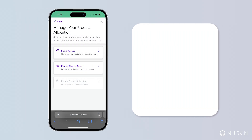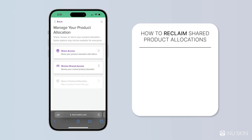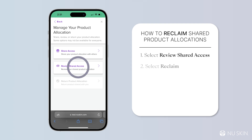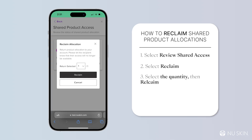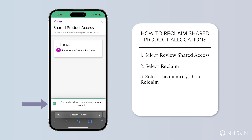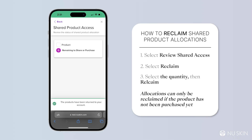If you've shared with someone who has decided they're not going to purchase and you want to reclaim that allocation from them, you'll first click on 'Review Shared Access.' Select the person that you want to reclaim from and click 'Reclaim' next to their name, then select the quantity. You'll get a toast banner at the bottom notifying you that the allocation has been returned to your account.